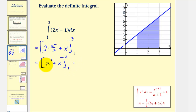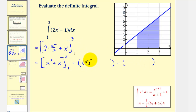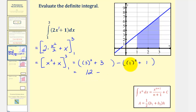Now we'll evaluate the anti-derivative first at three, then at one, and then find the difference. When x is three, we'd have three squared plus three. When x is one, we'd have one squared plus one. Simplifying: three squared plus three is twelve, minus one squared plus one which is two, so the value of the definite integral, which is also this area, would be ten.